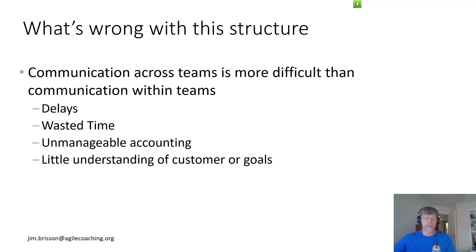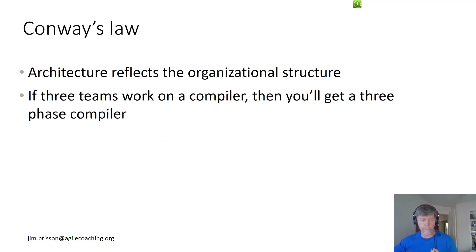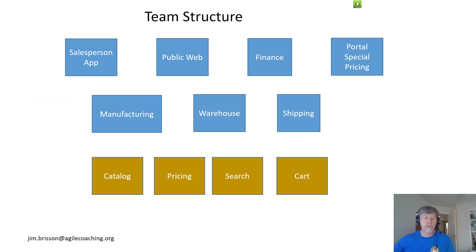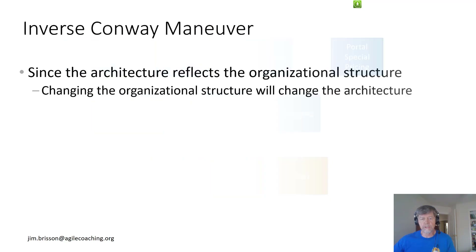There's very little understanding of the customer and what the customer's goals are. So let's get back to Conway's Law, because that's what we're trying to talk about. In Conway's Law, the architecture reflects the organizational structure. So if you set up three teams to work on a compiler, you're going to end up with a three-phase compiler. The architecture tends to follow the organizational structure — and that's what we found with the scheme I just described, which is really not that uncommon. When I talk to people, they say yeah, they've got something very similar.